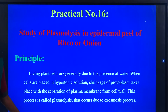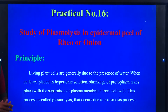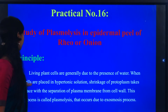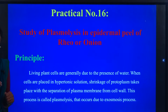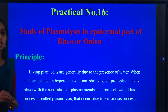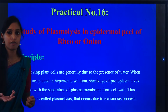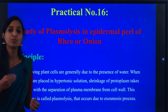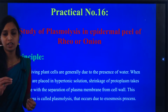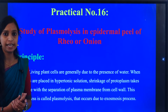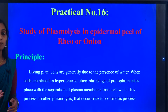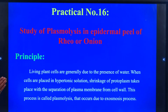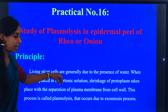So what is the principle behind this experiment? Onion peel and plant cell generally is a living cell when it is placed under a hypertonic solution. This is a living cell or plant cell in a hypertonic solution. Hypertonic solution is a concentrated salt solution. When the solute concentration is more than the solvent concentration, it is called a hypertonic solution.